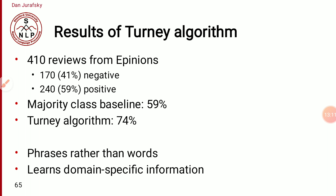The overall results of Turney's algorithm: they had 410 reviews from the Epinions dataset, where 170 (41%) were negative and 240 (59%) were positive. The majority class baseline was 59%. Turney's algorithm was designed to learn domain-specific patterns — it was heuristic and general, but could not work with a generic online dictionary. However, when built from a particular corpus, it worked fine.